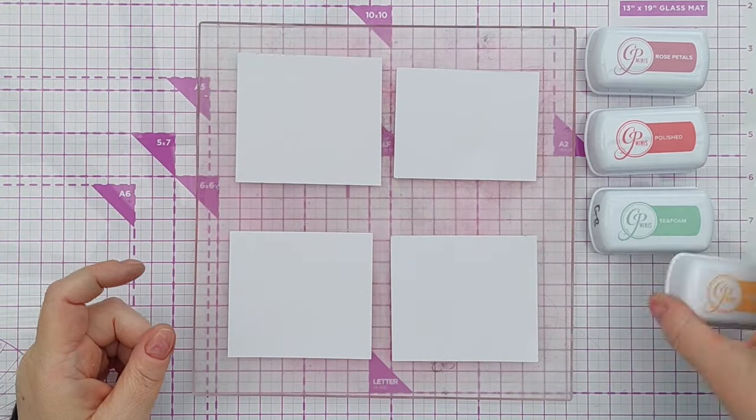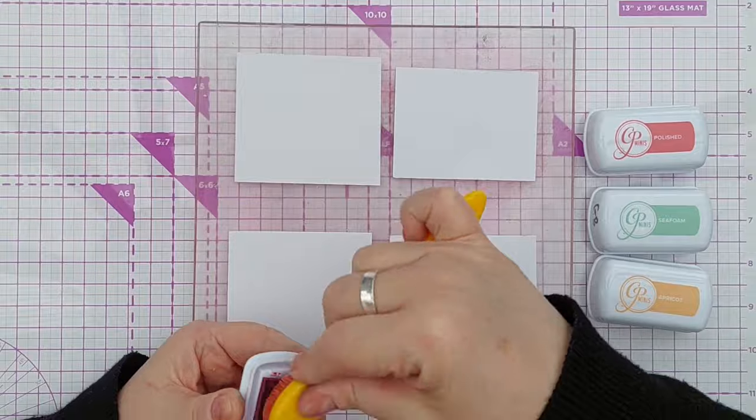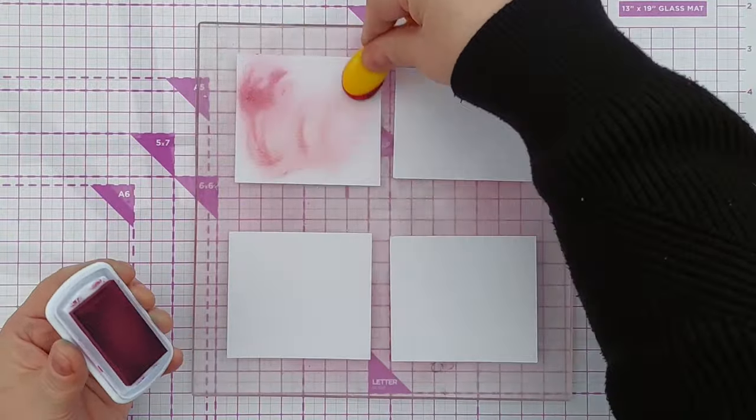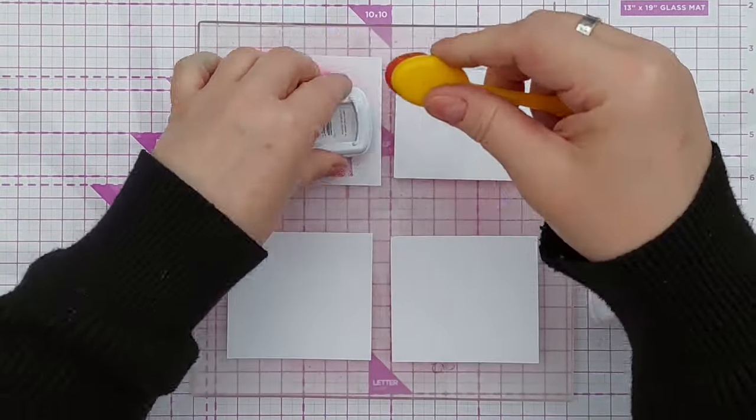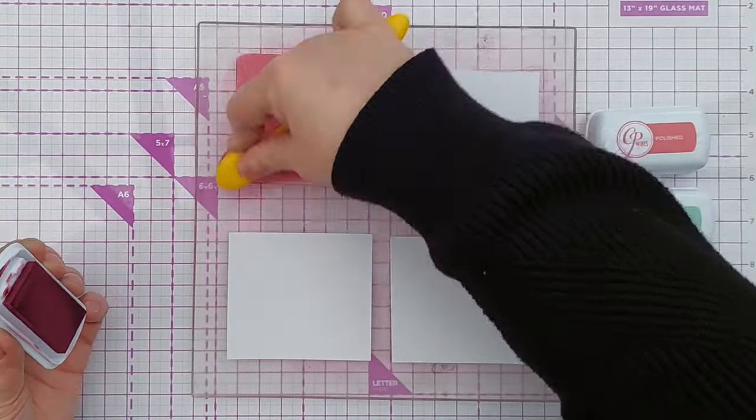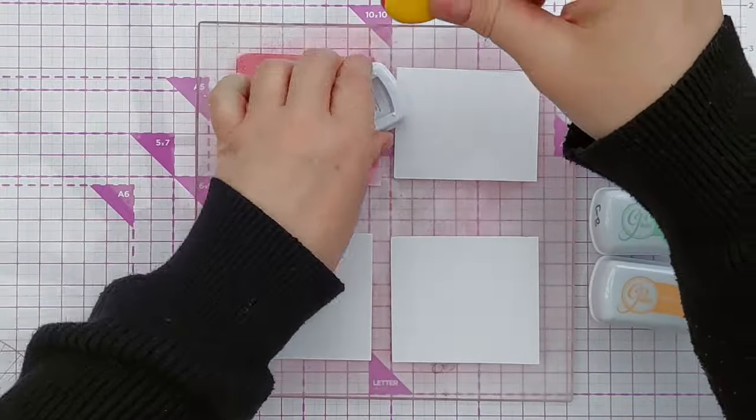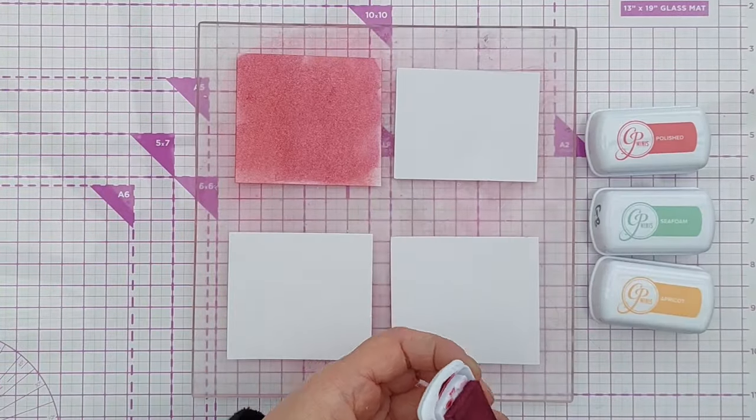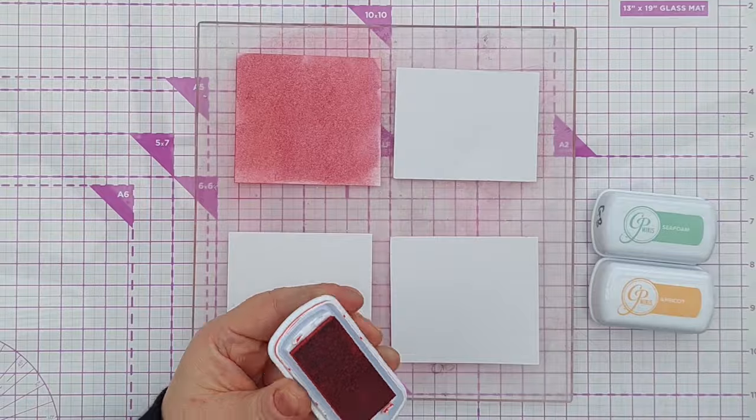So the first thing I did was take four pieces of mixed media paper and pop them on my grip mat. I then picked some inks that gave me a sunny adventure type feel and blended one on each piece of mixed media paper.